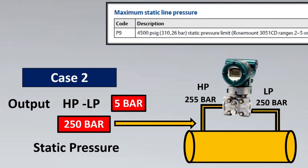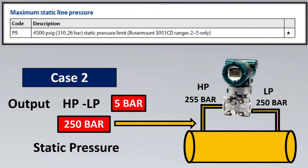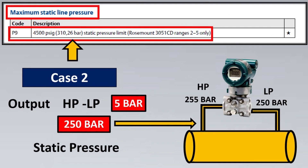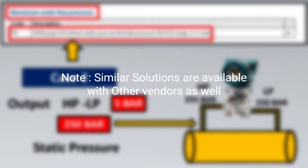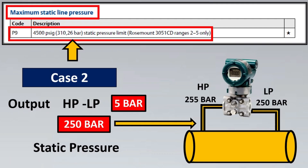Don't worry — there is a solution. In that same catalog, there is a special code, P9. With this code, the maximum static inline pressure goes up to 310 bar. Since our static pressure was 250 bar, we can specify code P9 in our requisition or data sheets and safely use this transmitter. This mistake is made by many engineers, and site queries about transmitter failures often trace back to this — so please be conscious about it.